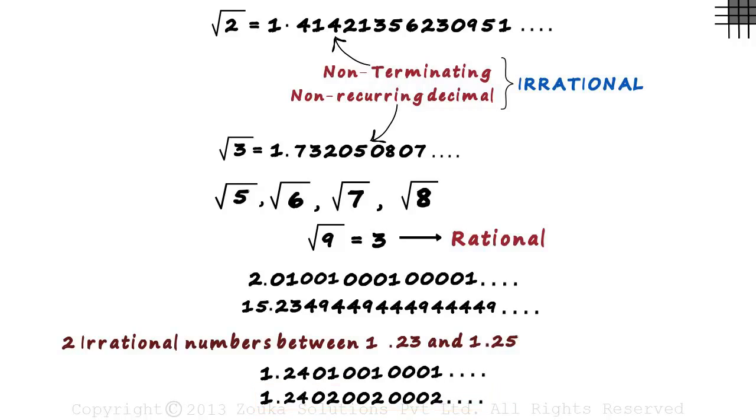So to find irrational numbers between two numbers, just write a rational number between them and then add non-terminating, non-recurring digits after it.